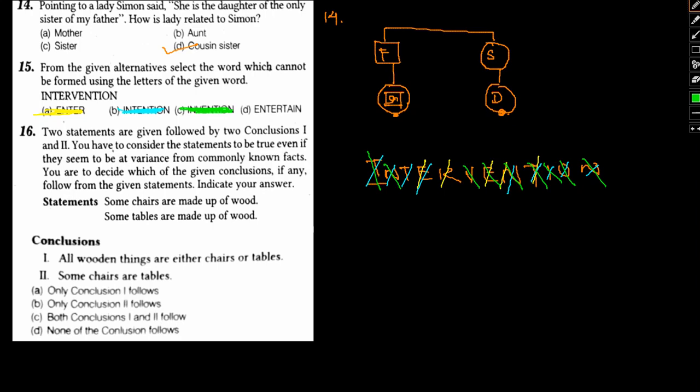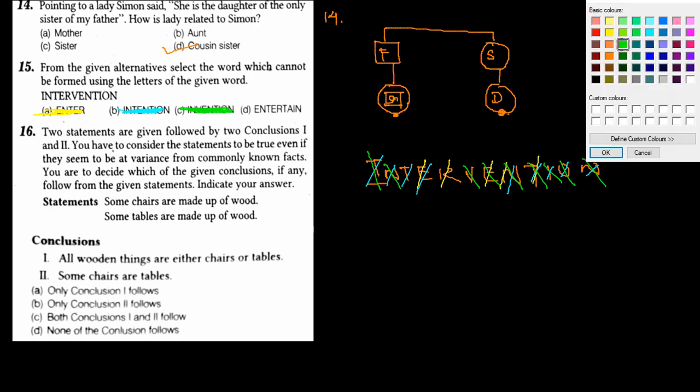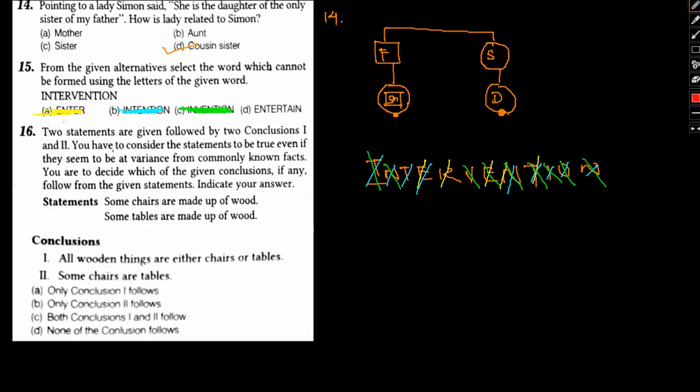That would leave ENTERTAINMENT. That should be the answer. But let's check out whether it's true or not. Entertainment: we have E here, we have N here, T, E, R, T, A. We don't have an A. So entertainment cannot be formed. Entertainment is our answer. I hope this is clear.